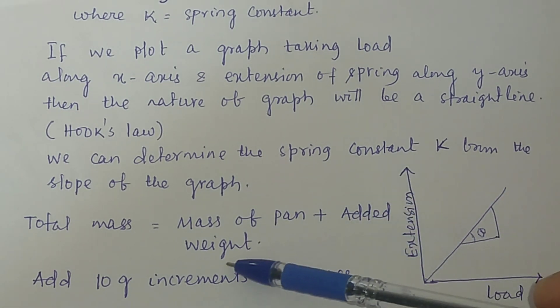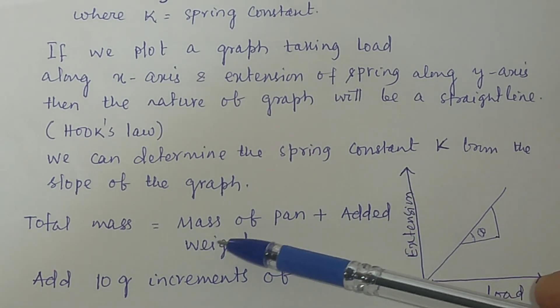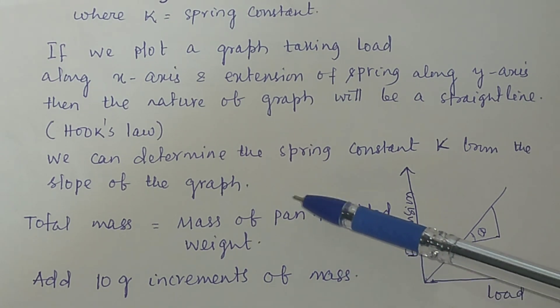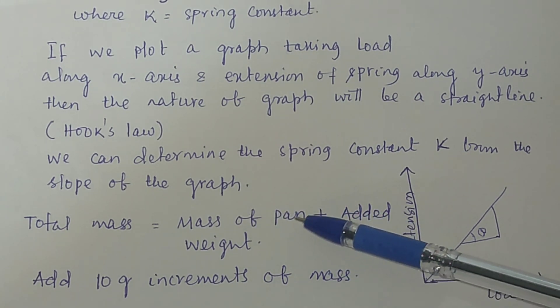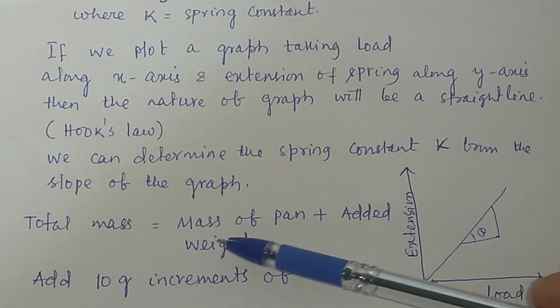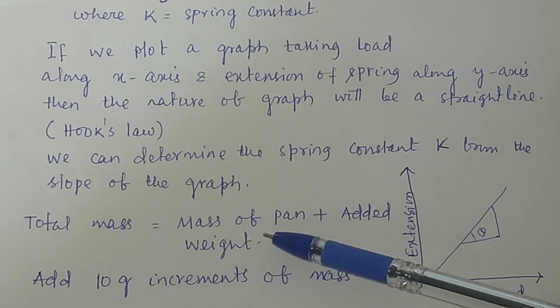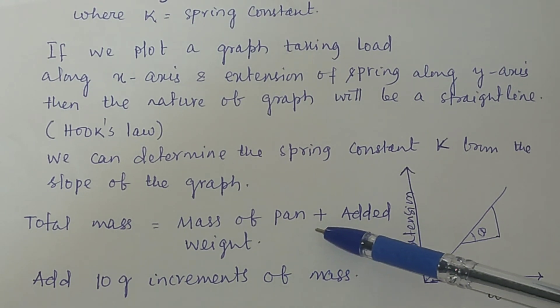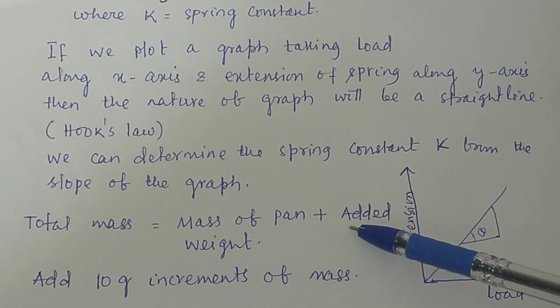When you take the total mass, you have to add the mass of the pan. If you use a pan to keep the load, then the total mass given to the spring will be equal to the mass of the pan plus the added weight.